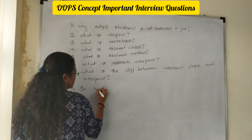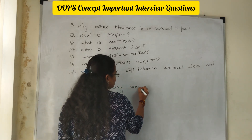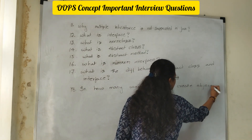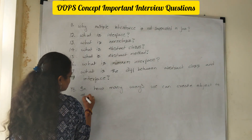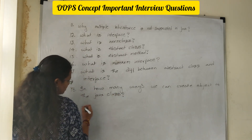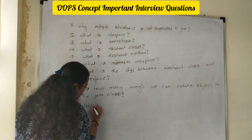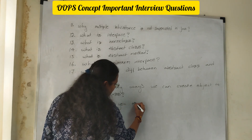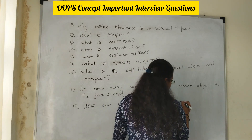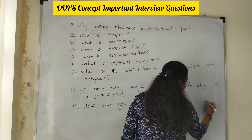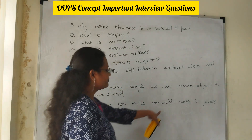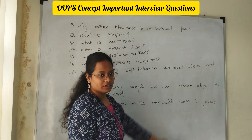Eighteenth question: in how many ways can we create an object in a Java class? Next, how can you make an immutable class in Java? Most people think we cannot make a class immutable, but in Java, by using a few steps, we can make a class immutable and we cannot change it.